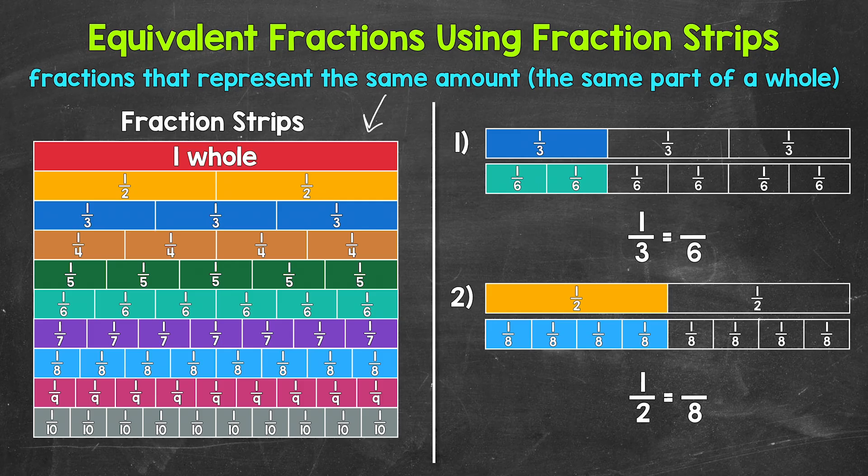Here are the fraction strips we are going to use in this video. We start with one whole, and everything is based off of this whole rectangle. Then we have the whole rectangle divided into two equal parts — so halves. Then the rectangle is divided into three equal parts — so thirds — then four equal parts, and so on and so forth, all the way down to 10 equal parts.